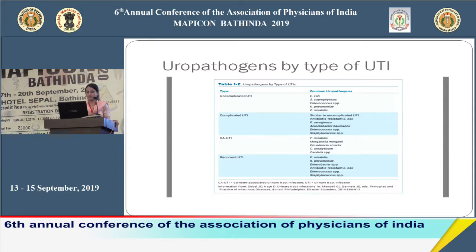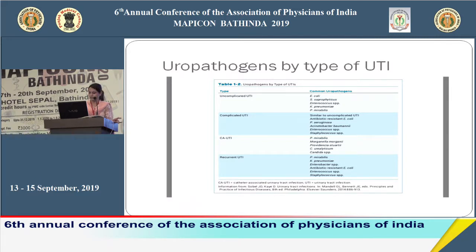This table shows the type of uropathogens according to the type of UTI. Most uncomplicated UTIs are caused by E. coli, while complicated UTIs are caused by either resistant E. coli or Pseudomonas/Acinetobacter. Catheter-associated UTIs and recurrent UTIs are mostly caused by Proteus mirabilis.